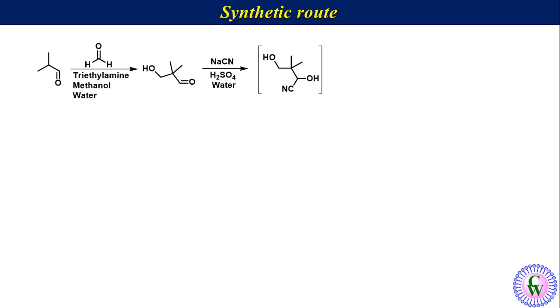The cyanohydrin after hydrolysis in the same reaction mixture produces 2,4-dihydroxy-3,3-dimethylbutanoic acid which undergoes cyclization in the presence of H2SO4 in methanol to produce the target molecule.